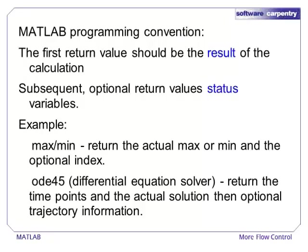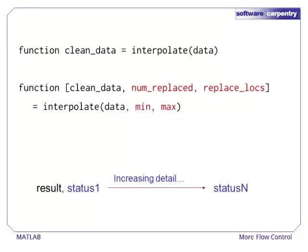If the user asks for more return values, those should be treated as status variables. For instance, the min function returns the minimum entry in a vector as its first return value. If another return value is requested, that value holds the index of the location that contained the minimum value. Our new function will accept an optional minimum and maximum acceptable value. It will also declare that it can return up to three values. The second return value is the number of locations we replaced. The third return value is the set of indices of locations that we replaced.